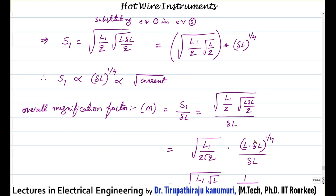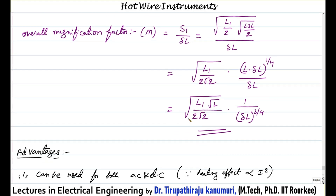The overall sag responsible for deflection of the pointer equals delta L to the power of 1 by 4. Since delta L is proportional to current squared, substituting gives (current squared) to the power of 1 by 4, which equals the square root of the RMS current. The overall magnification M equals S1 divided by delta L, giving a factor multiplied by 1 divided by delta L to the power of 3 by 4.